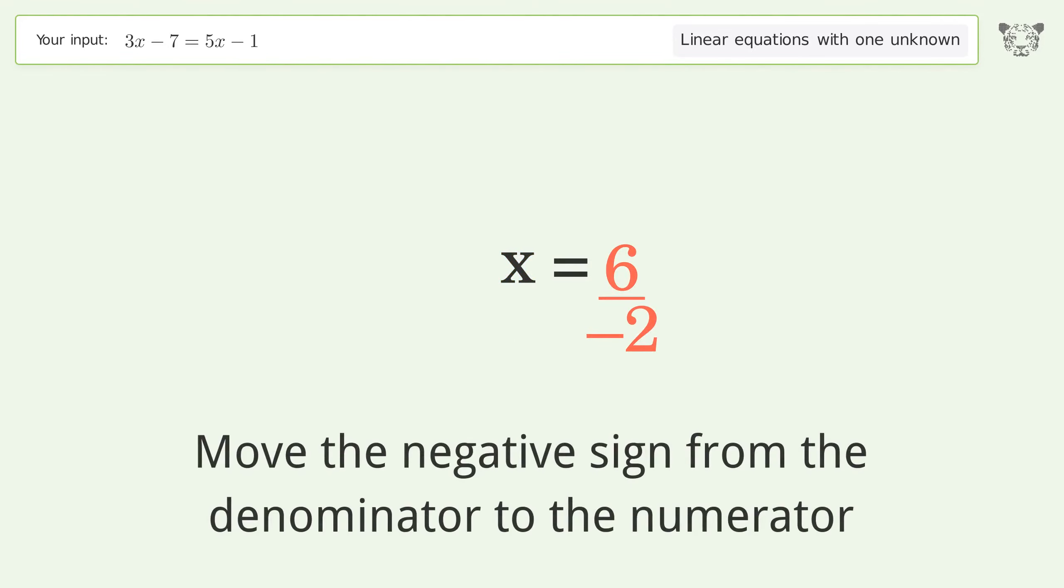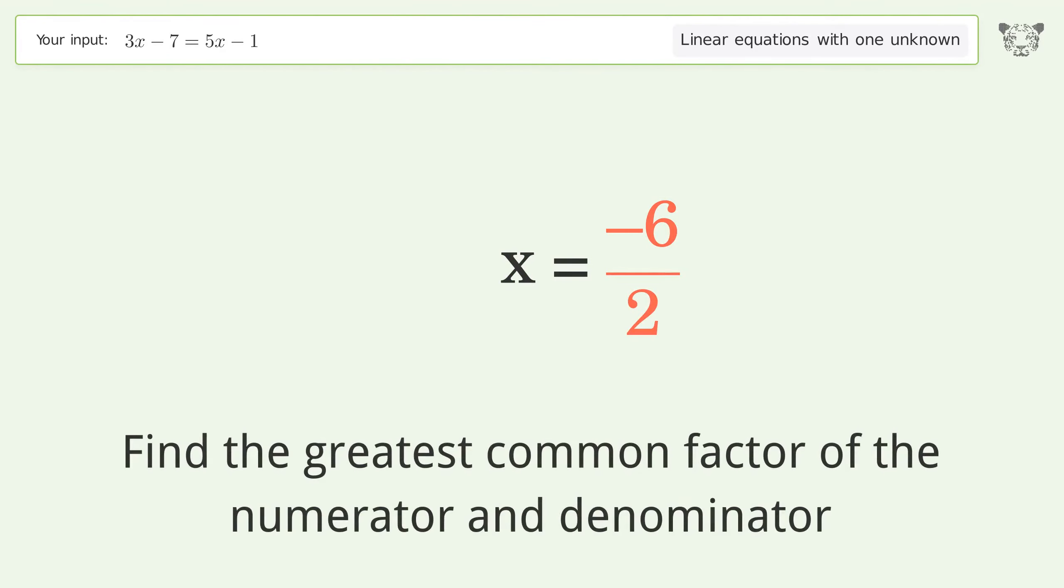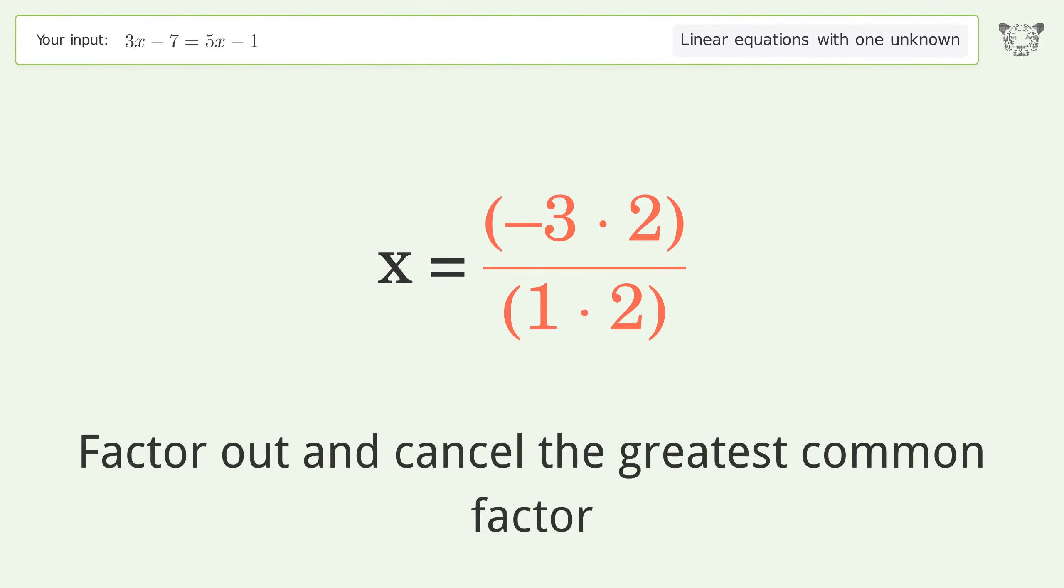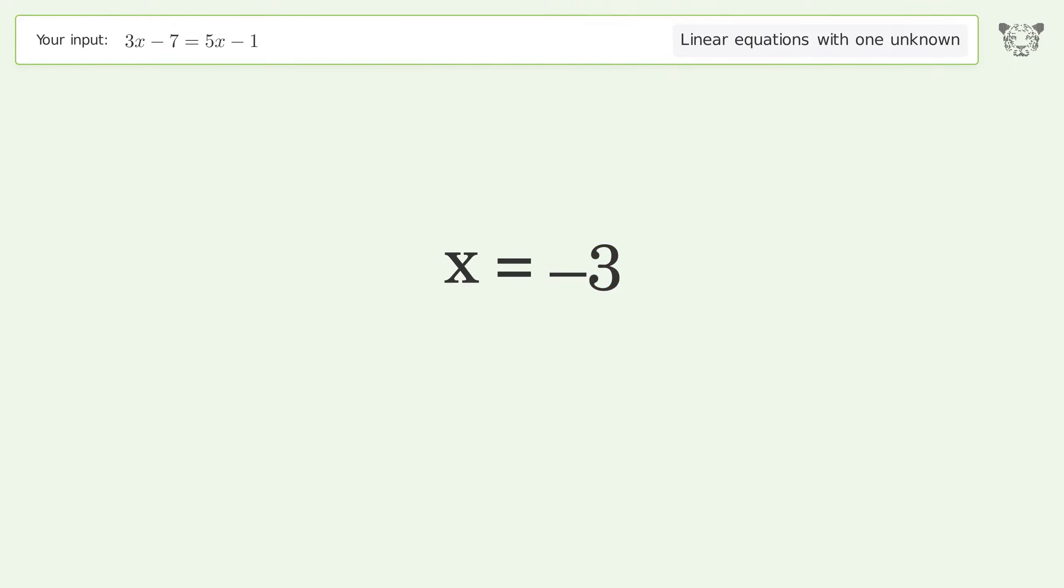Move the negative sign from the denominator to the numerator. Find the greatest common factor of the numerator and denominator. Factor out and cancel the greatest common factor. And so the final result is x equals negative 3.